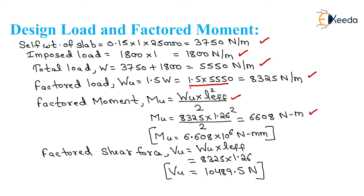Converting M_u to N·mm: 6.608 into 10 to the power 6 N·mm. Factored shear force for cantilever slab V_u equals W_u into L_effective. Putting the value: 8325 into 1.26 equals 10489.5 Newton.